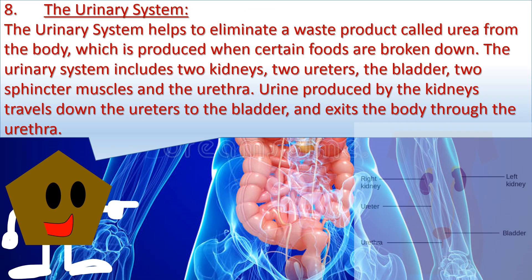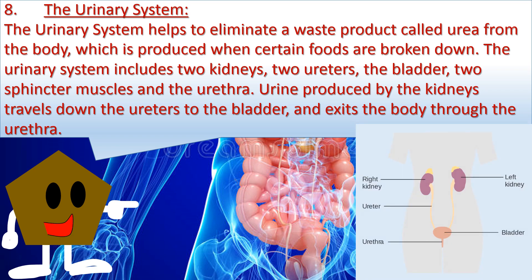8. The urinary system helps to eliminate a waste product called urea from the body, which is produced when certain foods are broken down. The urinary system includes two kidneys, two ureters, the bladder, two sphincter muscles, and the urethra. Urine produced by the kidneys travels down the ureter to the bladder and exits the body through the urethra.